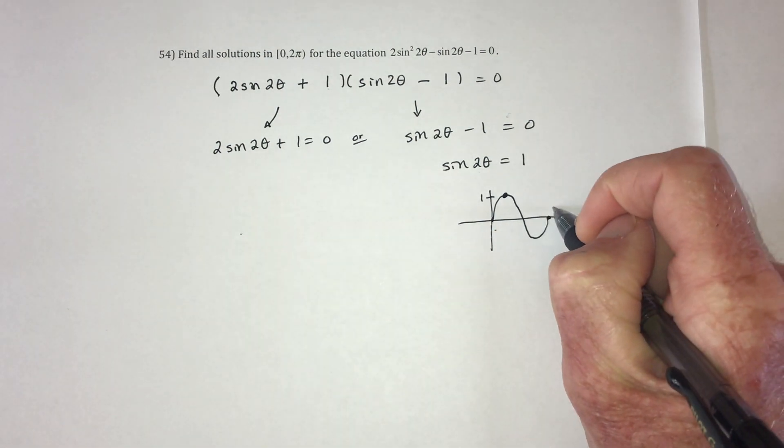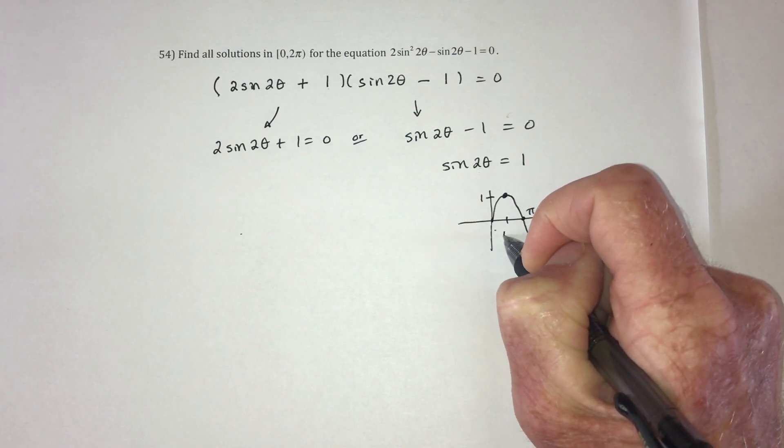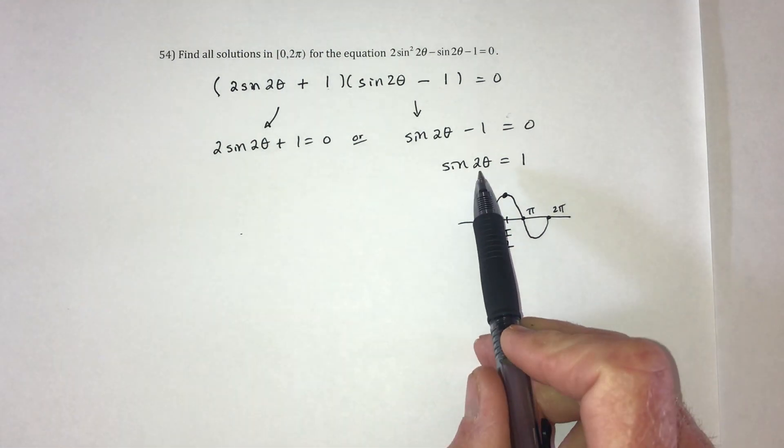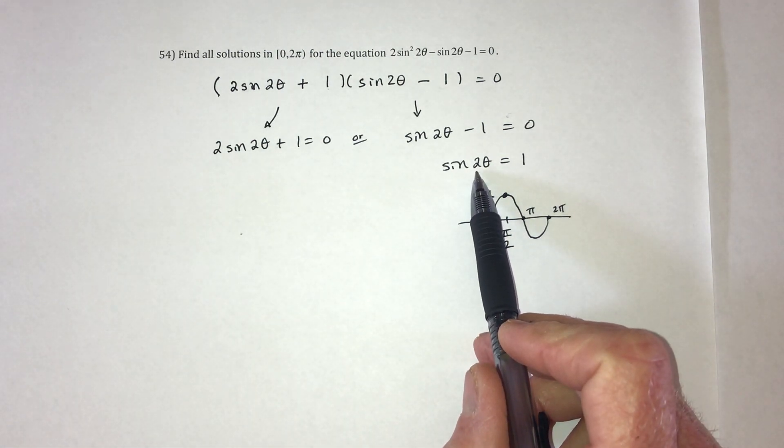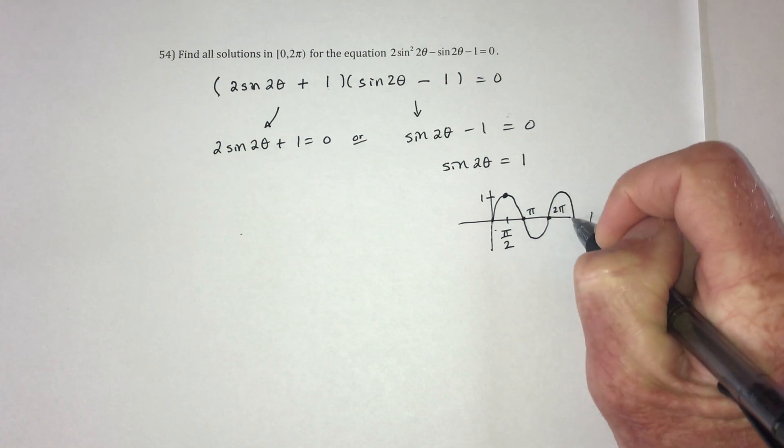Well, right here would be 2 pi. In the middle is pi. And so this would be pi over 2. But because it has this 2 right here, there's going to be twice as many answers as usual. So look at another cycle of sine.